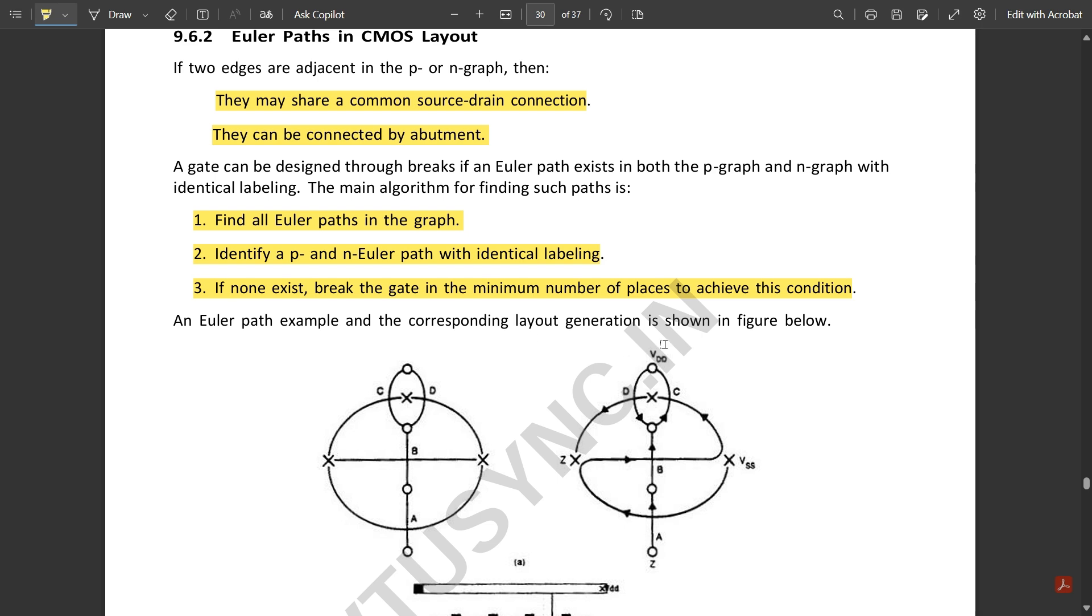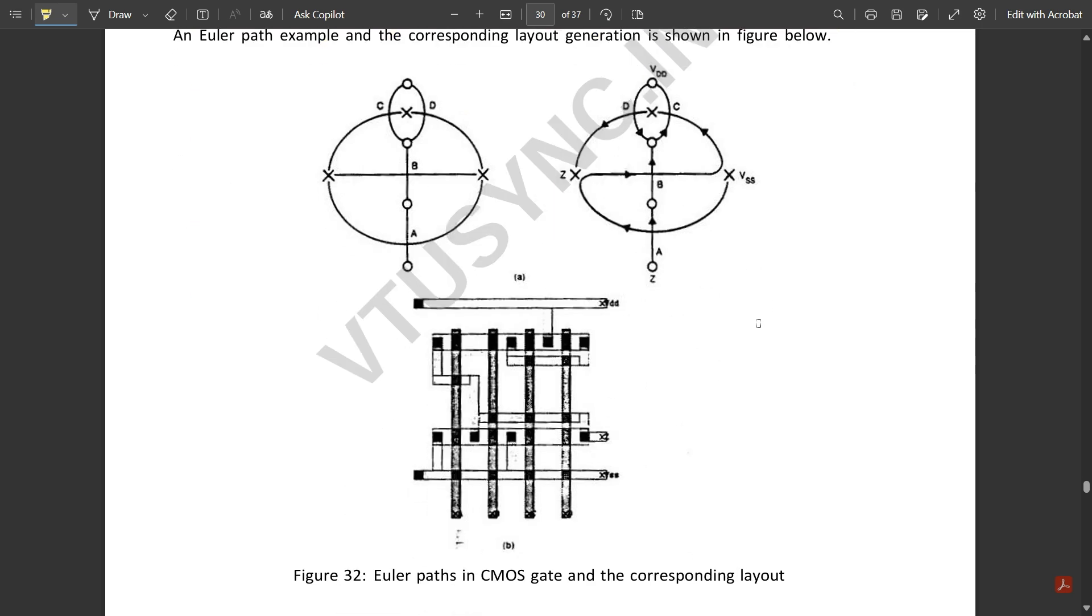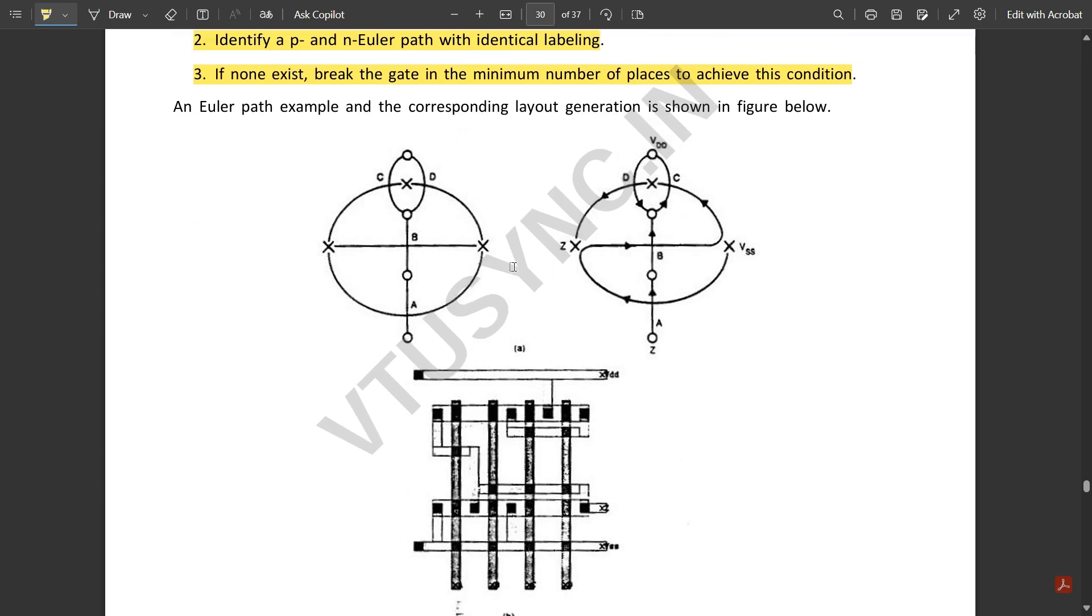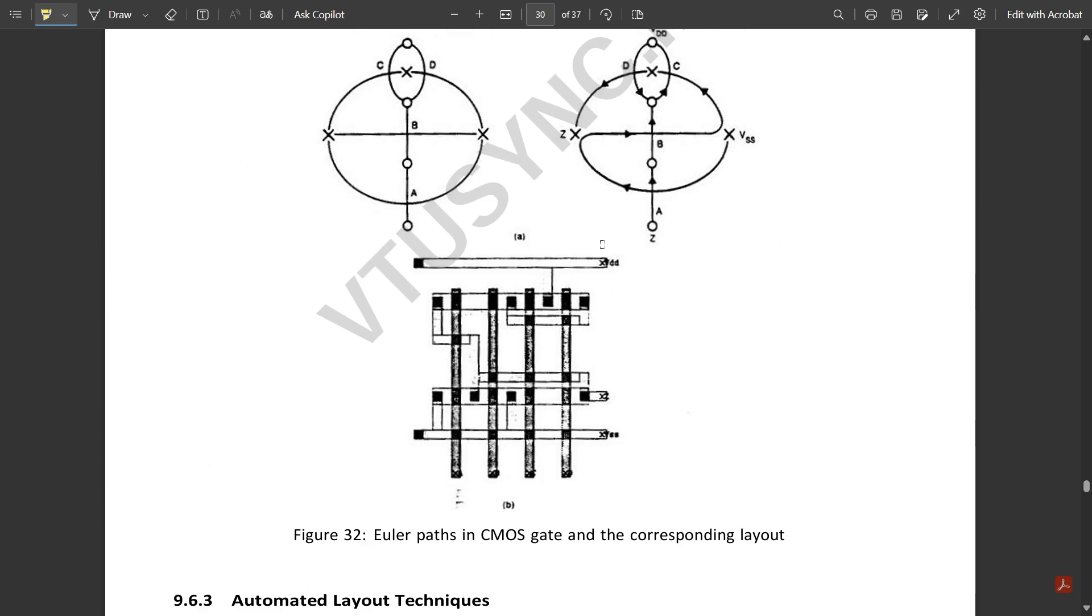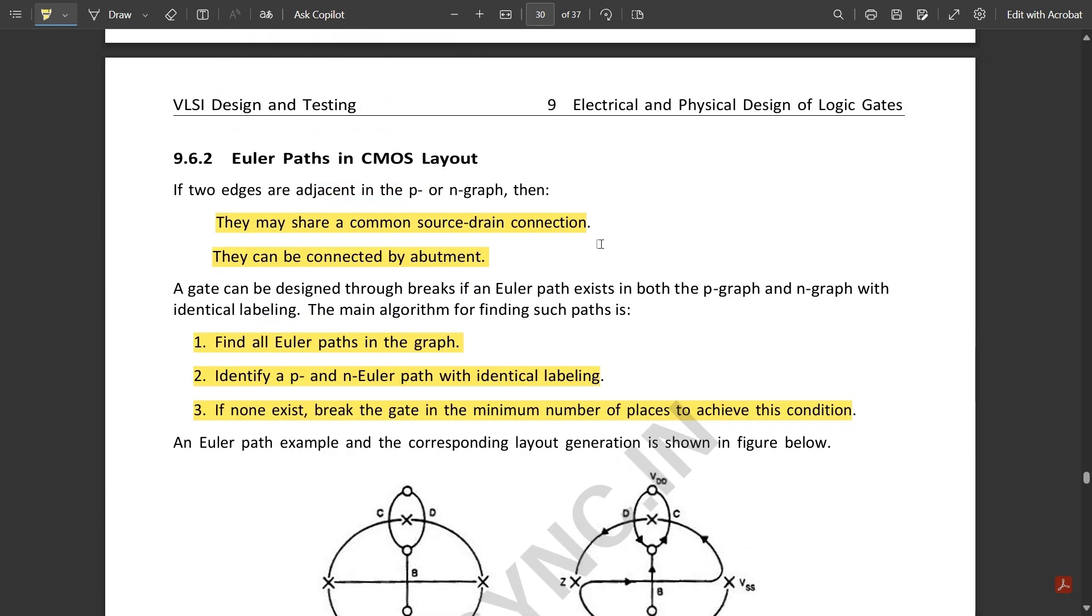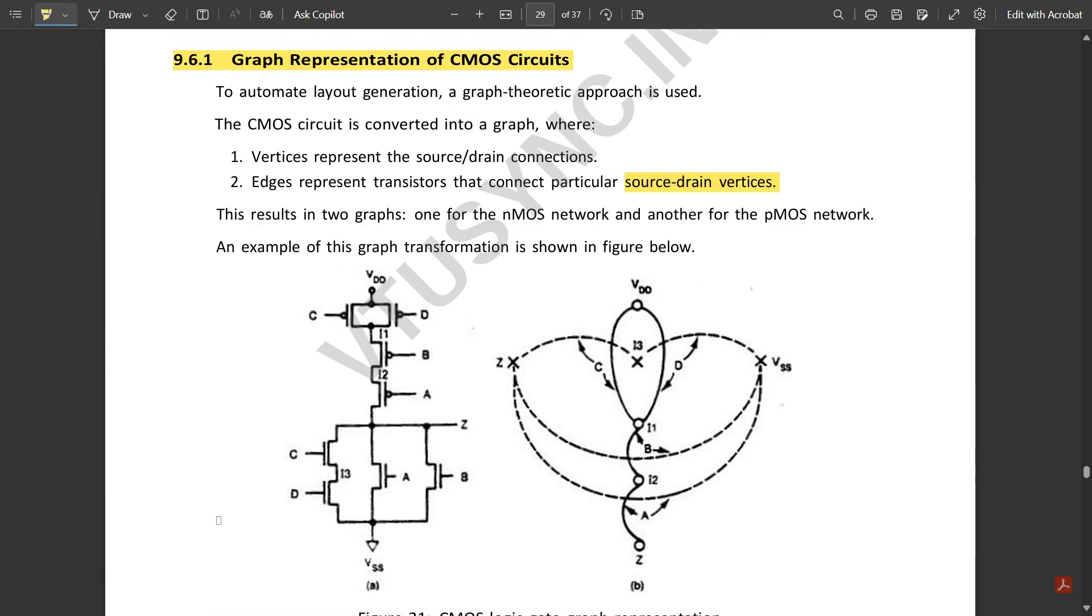An Euler path example and the corresponding layout generation is shown here. This was about the Euler path diagram for one simple logic example. Hope you understood it. That's all for the video. We'll see with one last video pending that we're going to cover in the next video. Thank you.